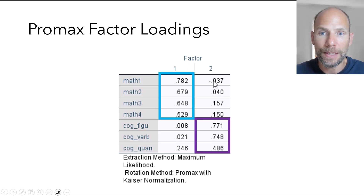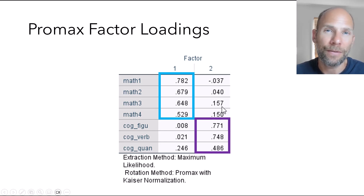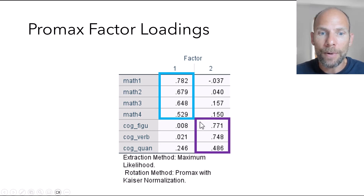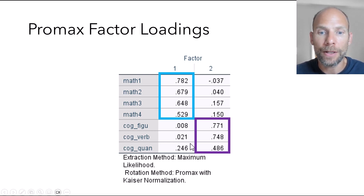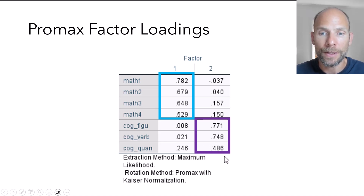Looking at the factor loadings in the numerical output, the loadings on the math factor are now clear and there are very few substantial cross loadings. For the math variables, the cross loadings on factor two are only between -0.037 and +0.157 — really negligible, basically zero. Likewise, two of the cognitive ability variables have loadings very close to zero on the math factor. The only variable with a relatively substantial cross loading is the quantitative subscale of the cognitive ability test, which uses numerical materials, so it is more strongly related to the math factor and has a more modest loading on the cognitive ability factor.